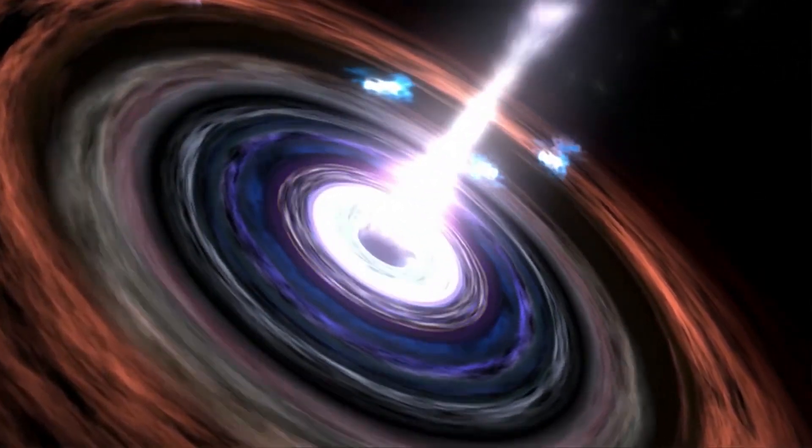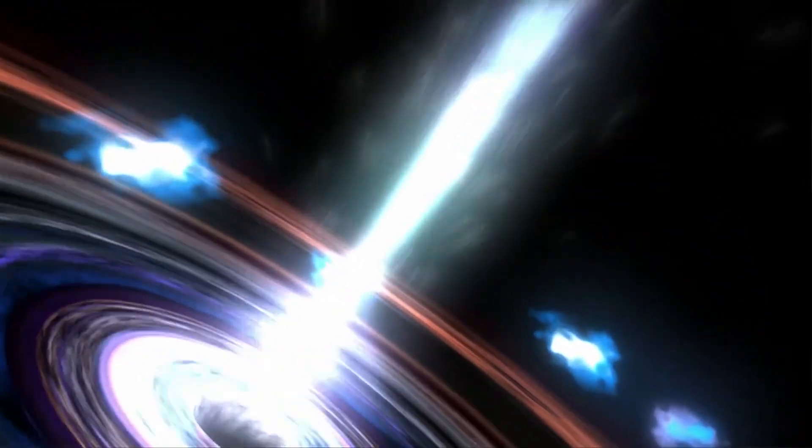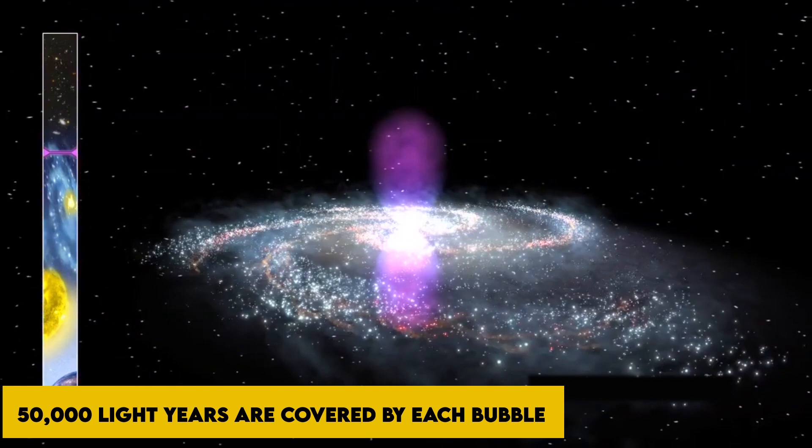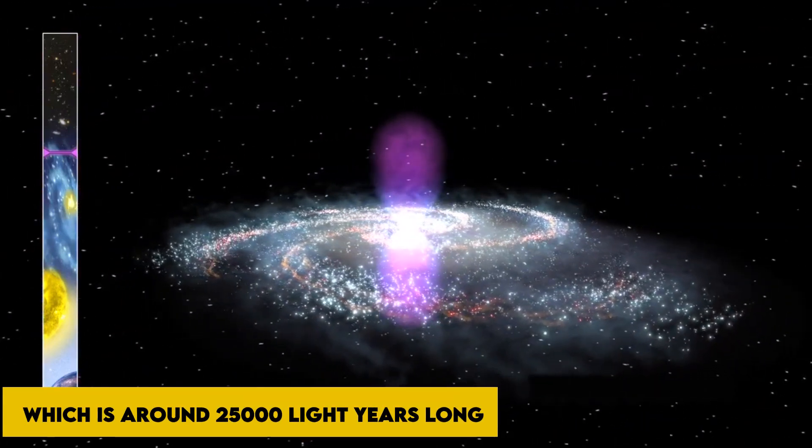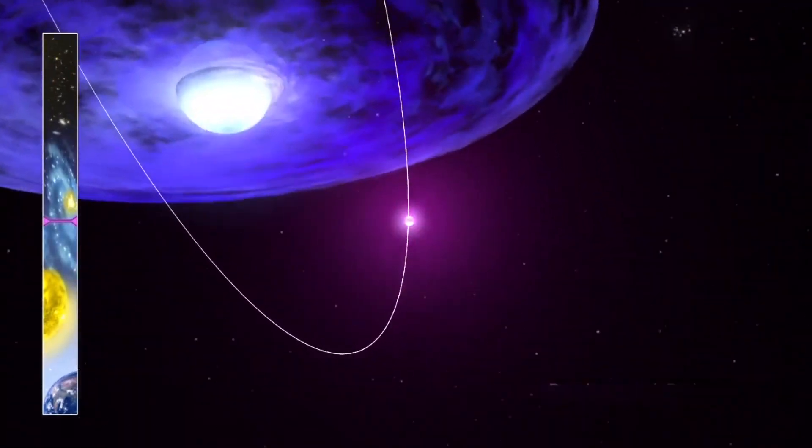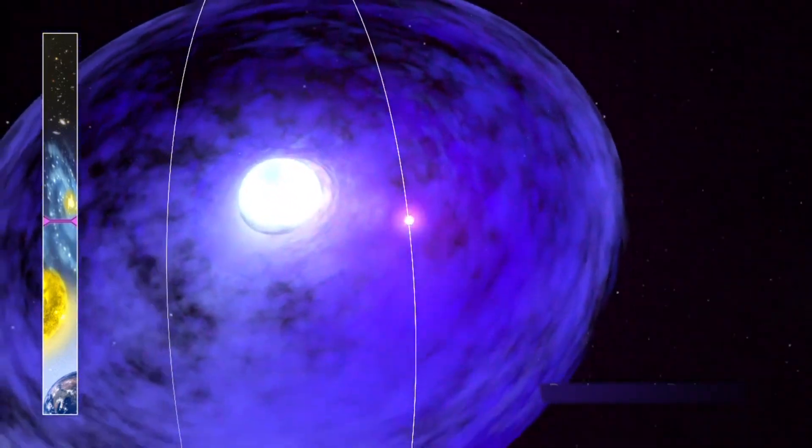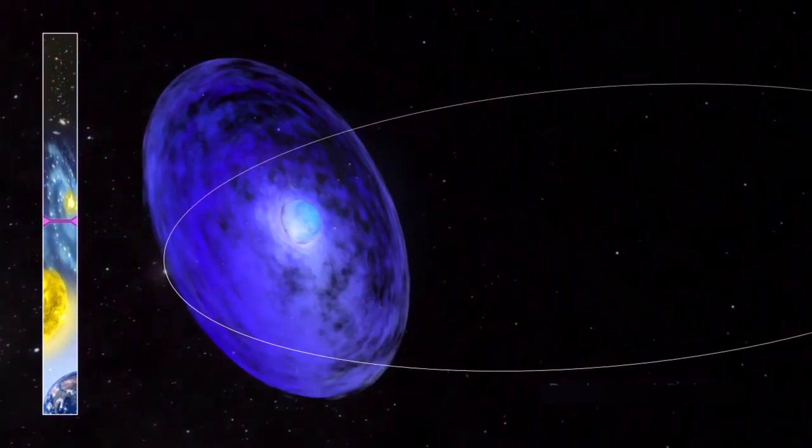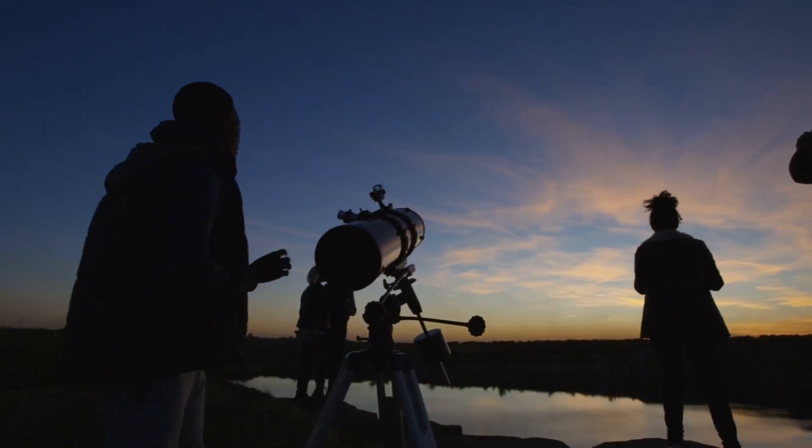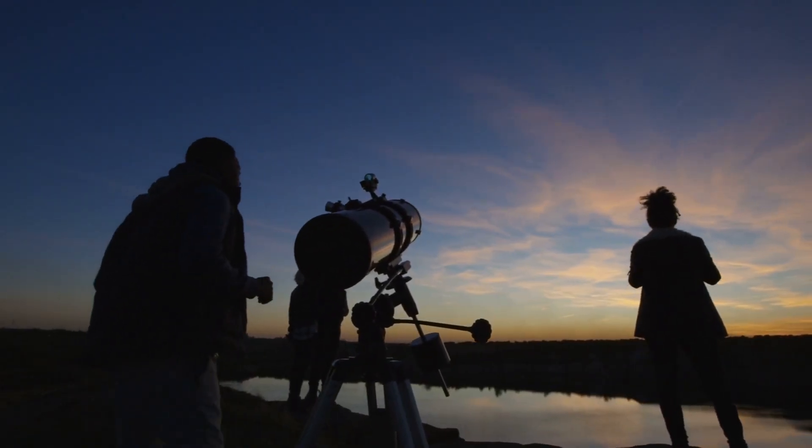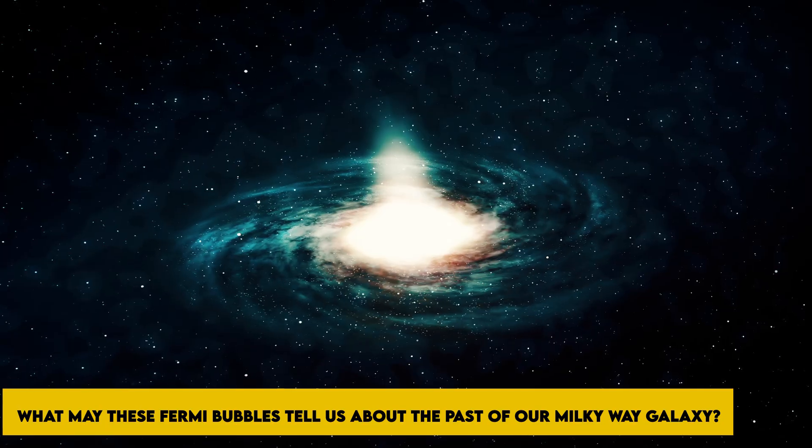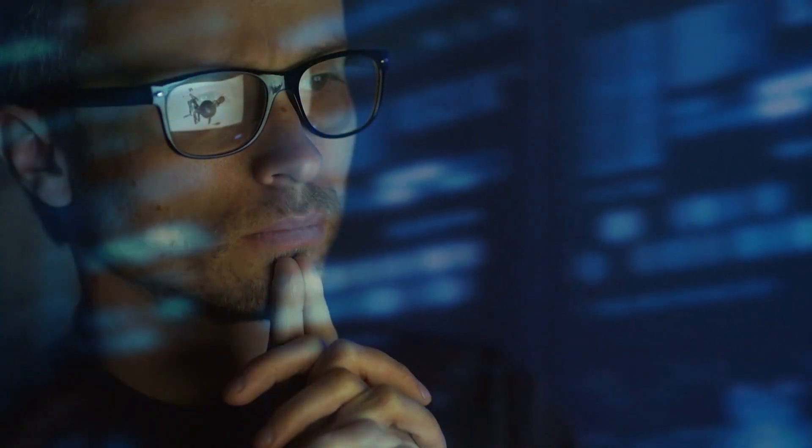These absolutely unexpected Fermi bubbles cover a full 10 percent of the sky. A total of 50,000 light-years are covered by each bubble, which is around 25,000 light-years long. It may be millions of years old and cover more than half of the visible sky, from the constellation Virgo to the constellation Grus. Astronomer's largest unanswered mystery is what might have actually created these Fermi bubbles. What may these Fermi bubbles tell us about the past of our Milky Way galaxy?